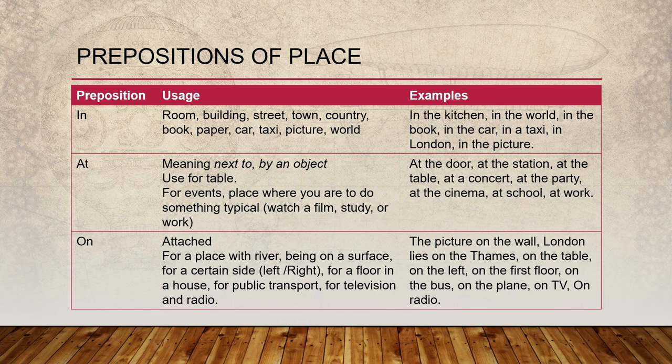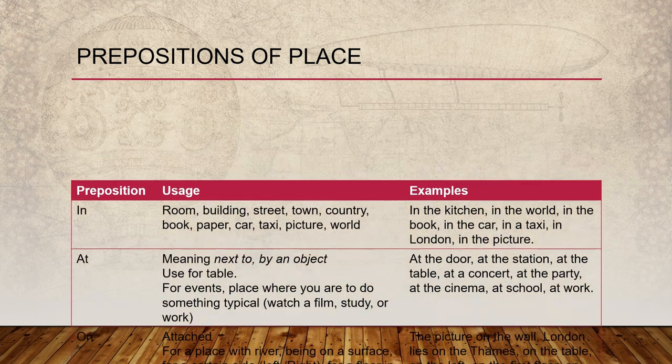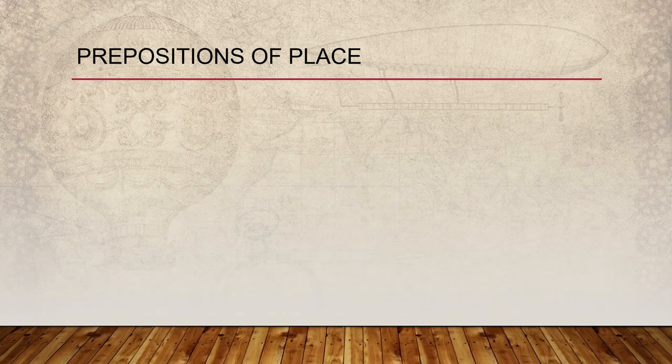'At' meaning next to or by an object — for example, at the door, at the station, at the table, at the concert, at the party, and so on. 'On' is used for something that touches a surface — for example, the picture is on the wall, London lies on the Thames, on the table, or on the left.